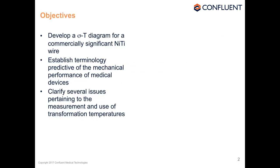The objectives for the next 35-40 minutes are threefold. First, we're going to develop the stress-temperature diagram for a commercially relevant nickel-titanium wire — one that's been cold worked and aged, not a theoretical fully annealed wire. Second, we'll talk about new terminology and problems with existing terminology. Third, we'll discuss issues pertaining to the measurement of transformation temperature, specifically d-sigma-dT, or the stress rate.